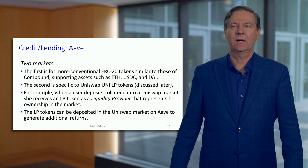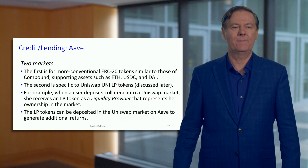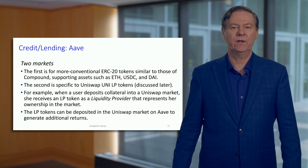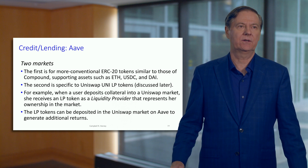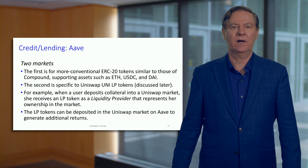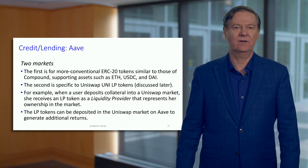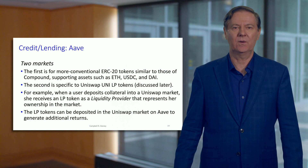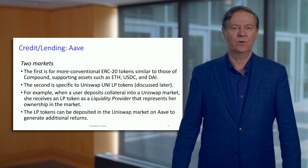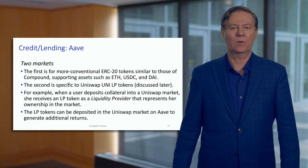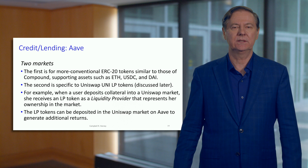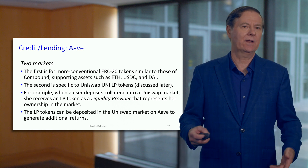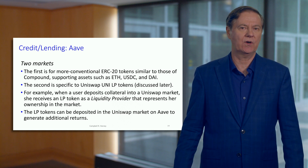I think of Aave as having two markets. The first is more conventional ERC20 tokens, very similar to Compound. We've got the main coin assets: Ether, USDC, and DAI — the stablecoin guaranteed by Coinbase — which we've talked about in this course in considerable detail. There's also another market specific to the Uniswap LP token.